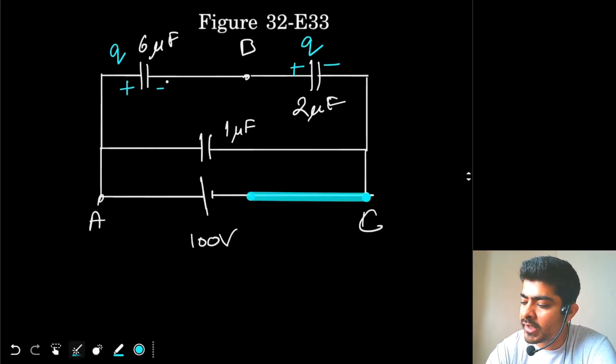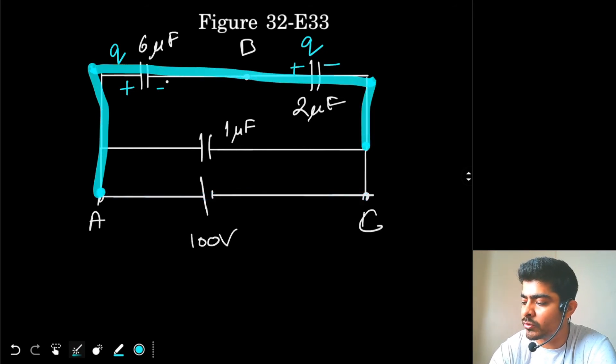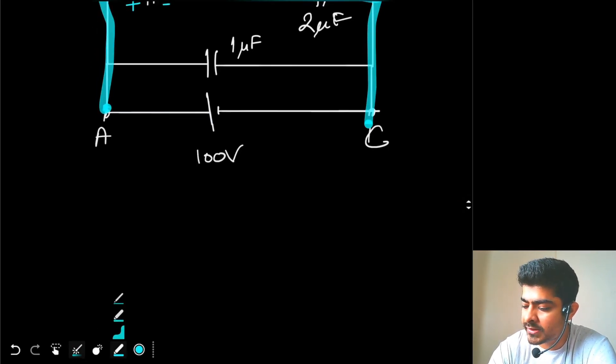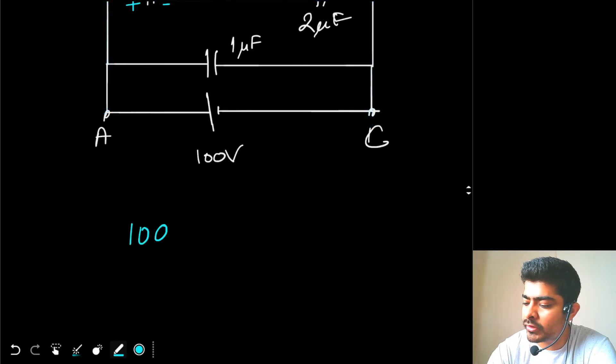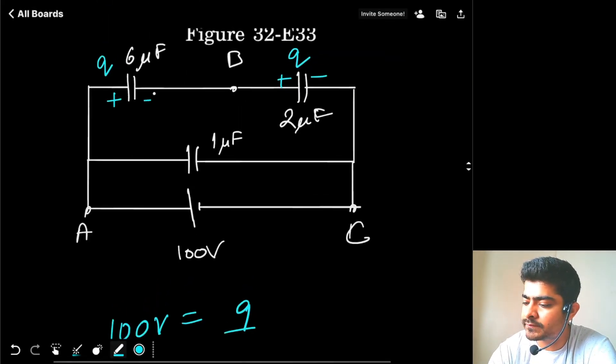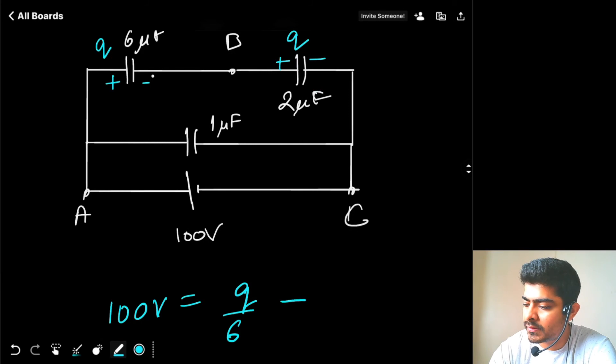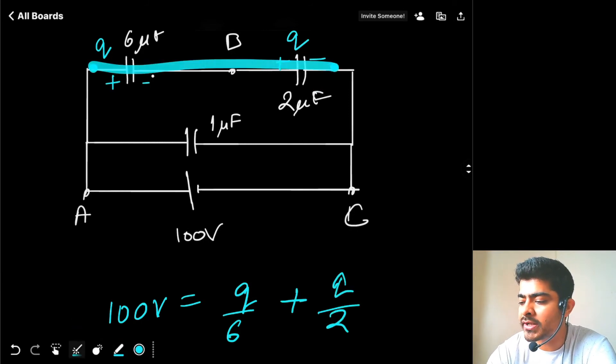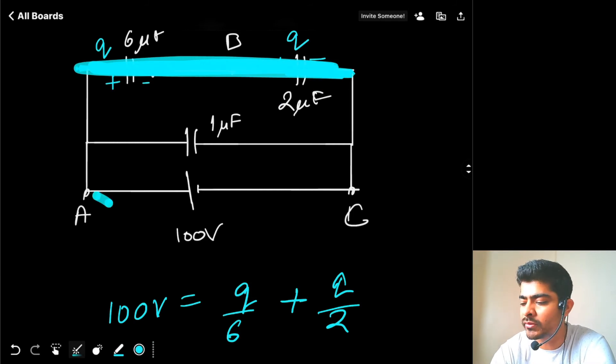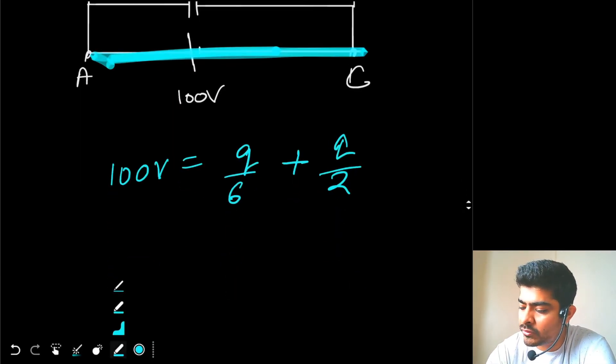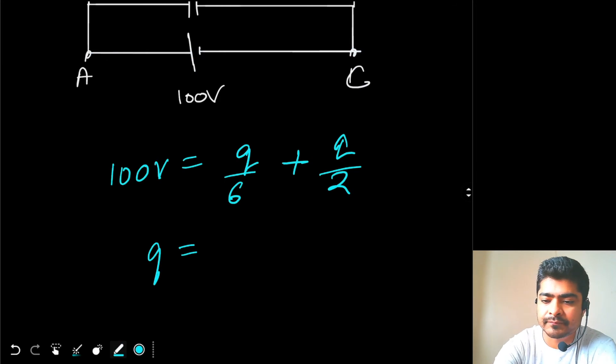So over here I have potential difference of 100V. Then minus q by 6 minus q by 2 equal to C. So 100V is basically q by 6 plus q by 2. Potential difference here is how much? q by 6 plus q by 2, that is equal to 100V. So we obtain q is equal to 150 microcoulombs.